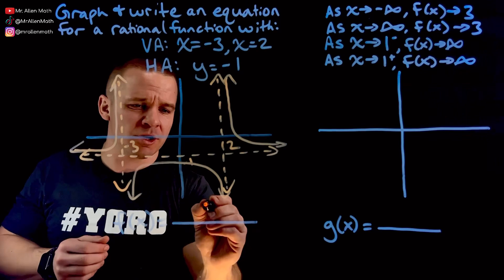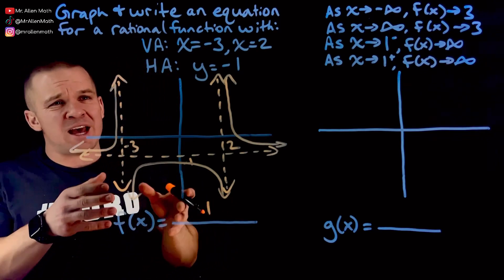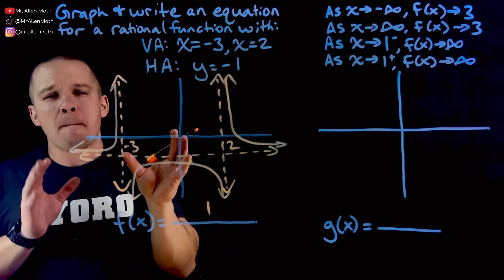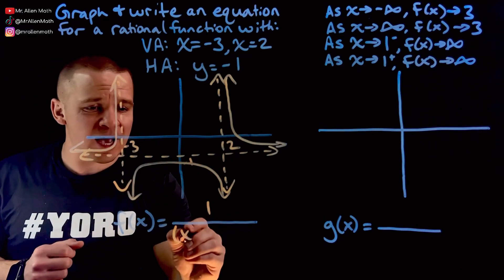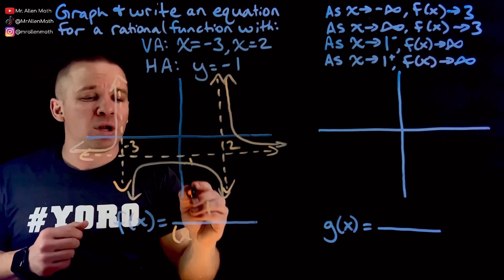So in my numerator I'm just going to go ahead and throw a one. And then down to my denominator, that's where I'm going to pop those vertical asymptotes because that's where they come from in my equation. So I'm going to have x and I got to think the opposite here, plus three.